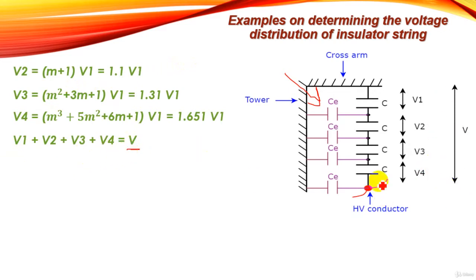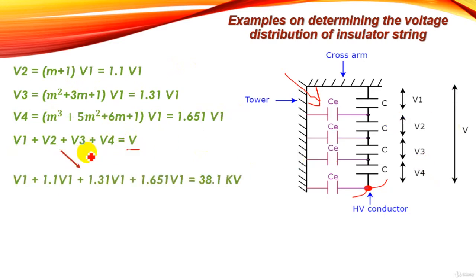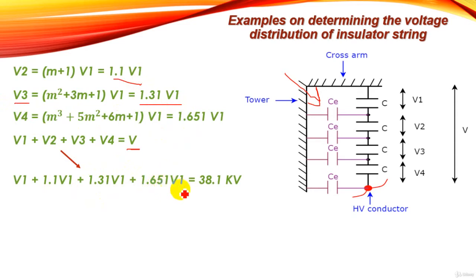The fourth equation is V1 + V2 + V3 + V4 equals the total voltage V of the insulator string. Substituting: V1 + 1.1·V1 + 1.31·V1 + 1.651·V1 equals 38.1 kV. So we have four equations in four unknowns and can solve for V1, V2, V3, and V4.